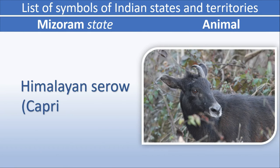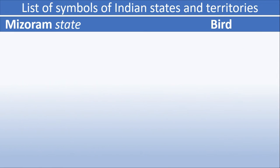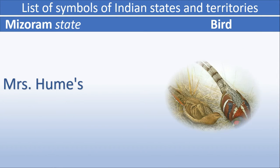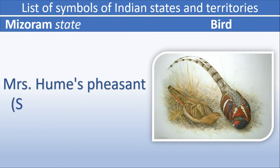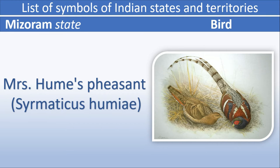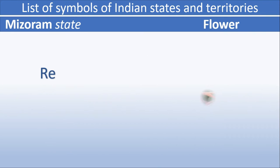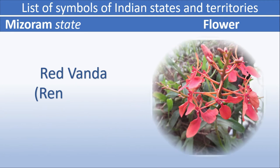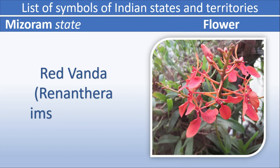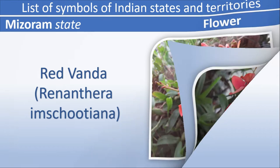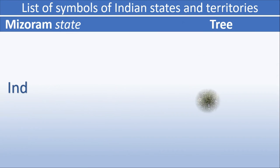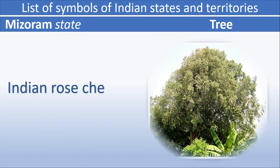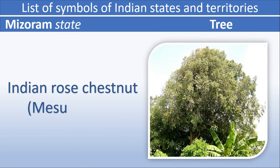Mizoram animal: Himalayan Serow. Mizoram state bird: Mrs. Hume's Pheasant. Mizoram state flower: Red Vanda. Mizoram tree: Indian Rose Chestnut.